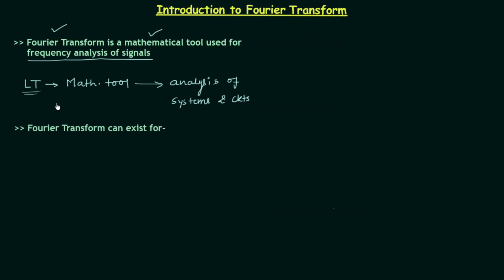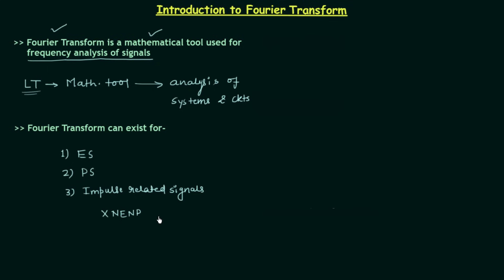Now we move to the next point: the existence of Fourier transform. Fourier transform can exist for impulse-related signals. However, Fourier transform does not exist for neither-energy-nor-power signals in general. Impulse-related signals are neither energy nor power signals, so why do we have Fourier transform for them? The answer is it is an exception, because impulse-related signals are absolutely integrable signals, whereas other neither-energy-nor-power signals are not. According to the Dirichlet condition, absolutely integrable signals will have a Fourier transform.